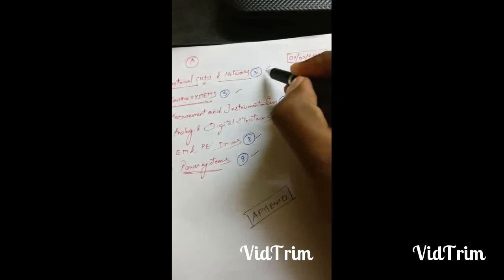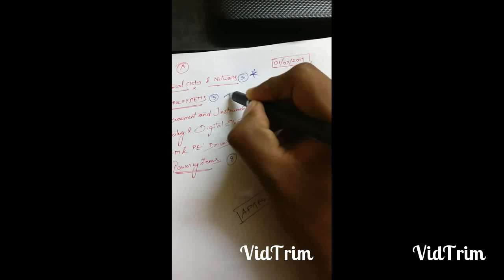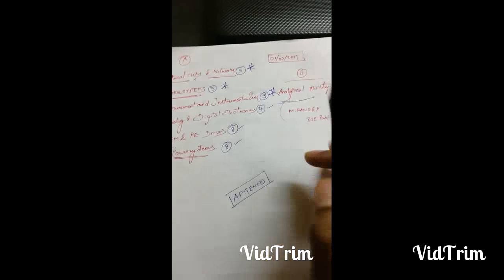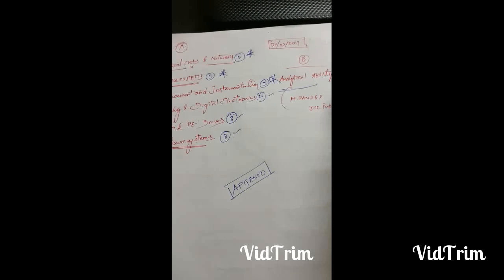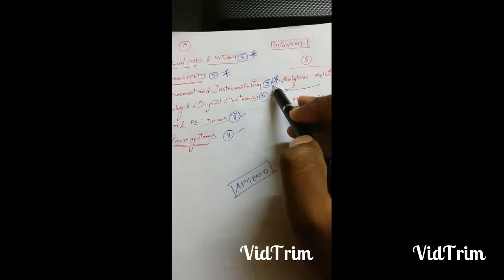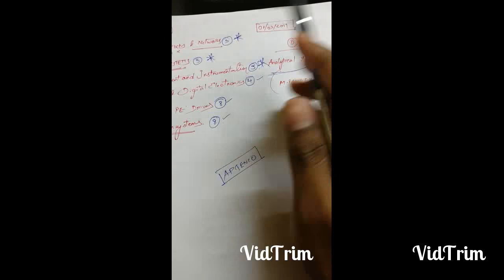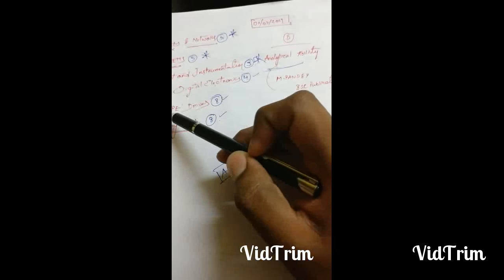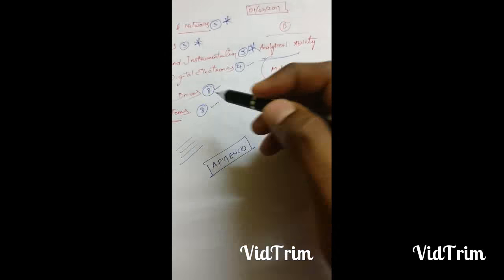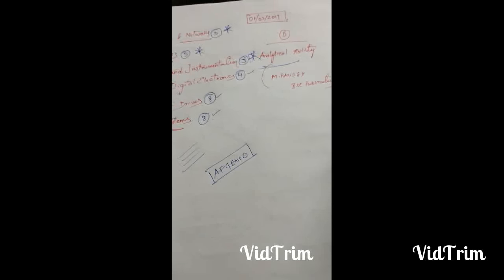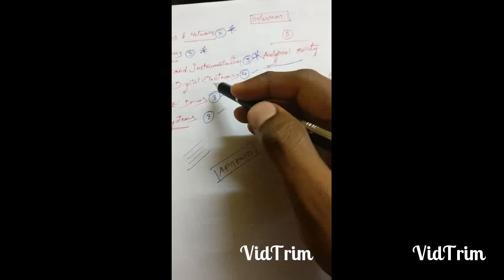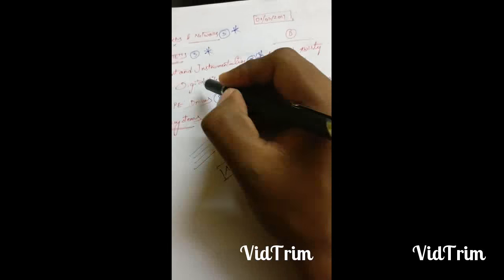The scoring subjects are power systems, control systems, and measurement and instrumentation. I'm saying scoring subject because we can complete them in less time with more bits in GENCO examination. If we can save time in these subjects, we can utilize that time on difficult topics like power electronics, power systems, or electrical machines which generally have three to four line questions. Practice more on these three subjects so time consumption will be less and we can focus on other topics.